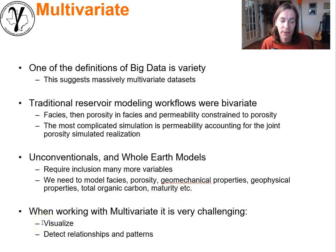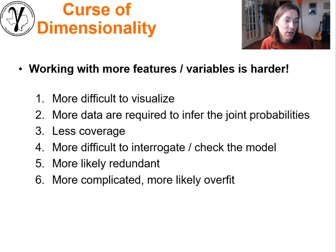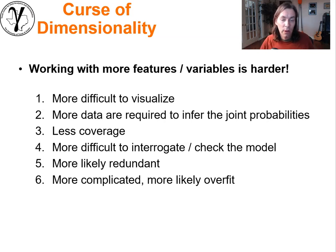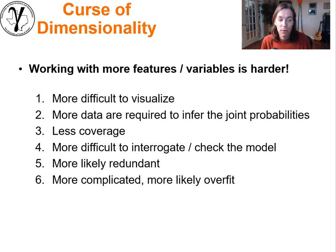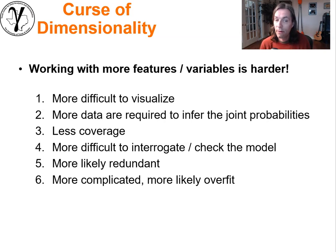When we work multivariate, it's very challenging to visualize, detect relationships and patterns. It's easier if we can get to lower dimensionality. The curse of dimensionality can be summarized as follows: it's harder to visualize when you have many features or variables. High dimensional space is hard to look at. More data is required to infer all the joint probabilities. The coverage problem means you have less coverage. Higher dimensionality means you don't explore as much of the space. More difficult to interrogate, more likely to have redundant features leading to model instability and multicollinearity problems, and more likely to overfit.